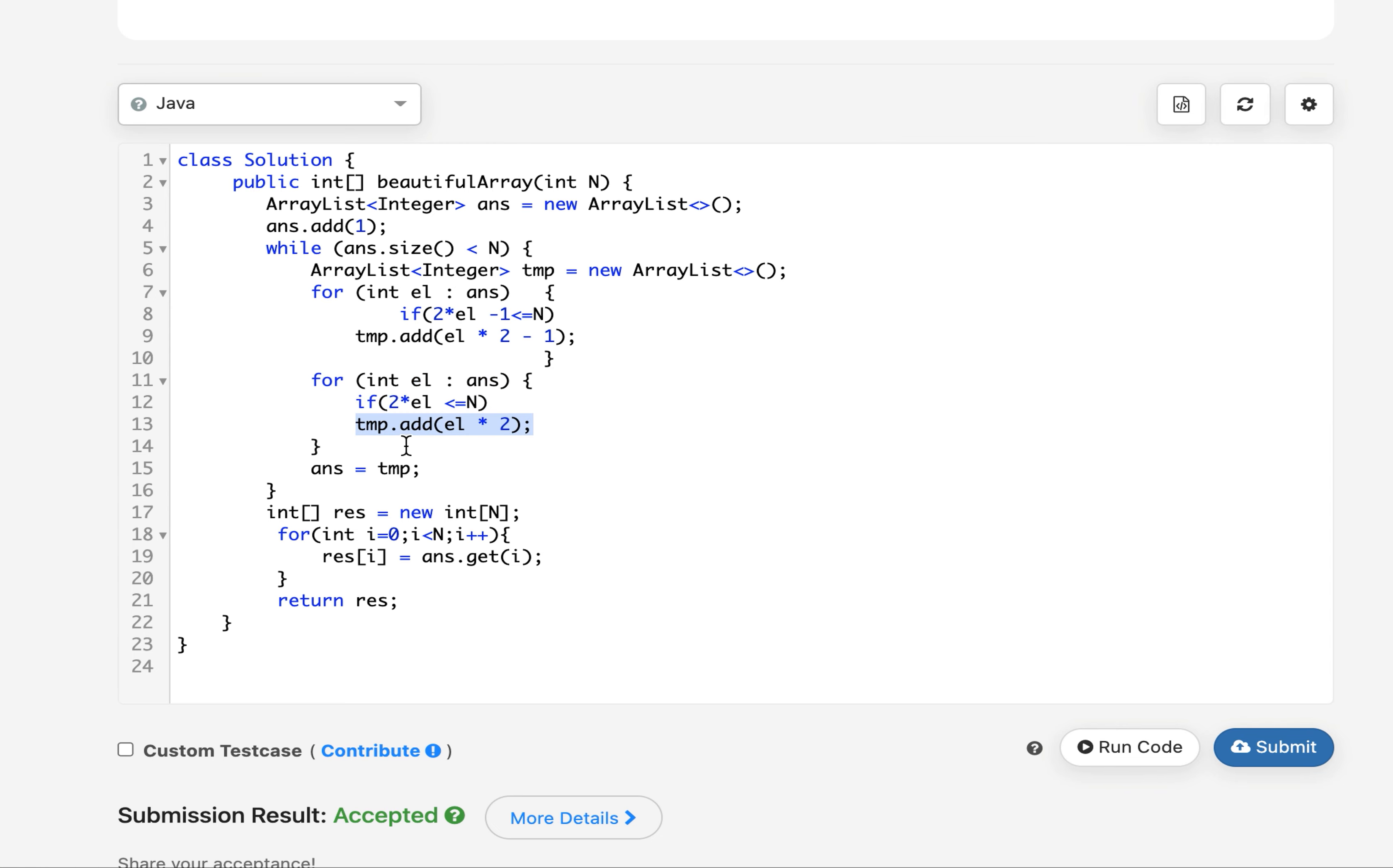As we move ahead and progress for the next iteration, I assign ans to the temporary array. Once I have filled in all the elements up till size of ans becomes equal to n, I break out of this while loop. I dump it into an integer primitive array and I return the result.